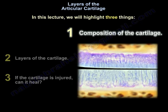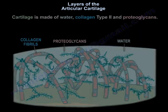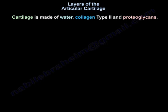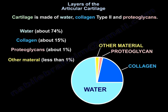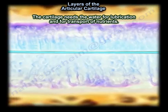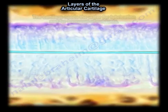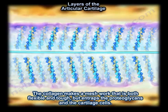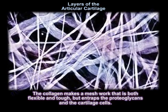We'll start with composition of the cartilage. The cartilage is made of water, collagen type 2, and proteoglycans. Water is about 74%, collagen about 15%, proteoglycan about 1%, and other material less than 1%. The cartilage needs water for lubrication and transport of nutrients, and it needs collagen to give tensile strength and stiffness. The collagen makes a meshwork that is both flexible and tough.